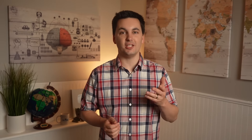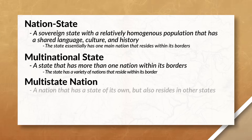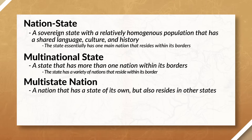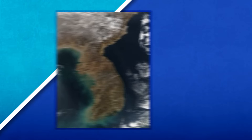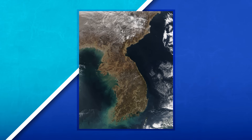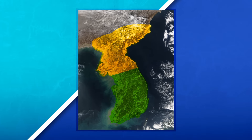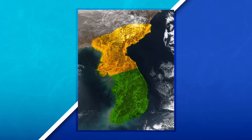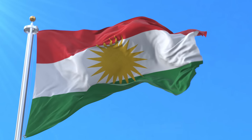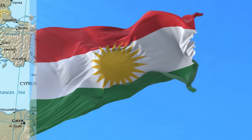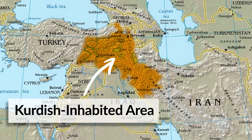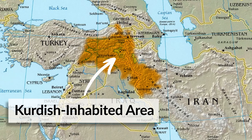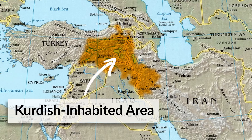Another type of state that we have is a multi-state nation. This is when a nation stretches across different states' borders, which means the cultural identity is present in multiple states. A great example of a multi-state nation would be the Koreans, who are located in both North and South Korea. We could also look at the Kurds as another example of a multi-state nation. Today, the Kurdish population stretches over Turkey, Iran, Iraq, Syria, parts of Armenia, and Azerbaijan.